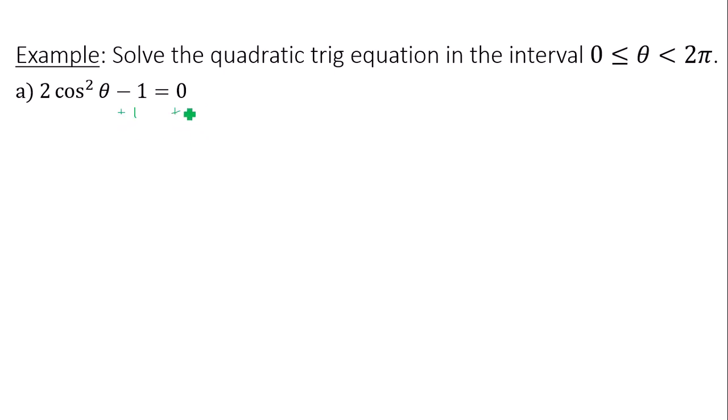This one can actually be solved using the square root method. So we'll isolate the quantity squared, which would be cosine, add 1 to both sides, divide by 2 on both sides. Then you'll take the square root of both sides and you will get cosine of theta equals plus or minus square root of 1 over square root of 2.